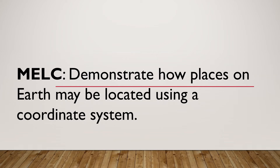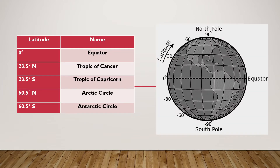Hello Grade 7 students, welcome to our lesson for today for the 4th grading in science, week 1. The MLC is to demonstrate how places on earth may be located using a coordinate system. A globe is just a representation of our planet Earth. In a globe, there are two different lines: we have the horizontal line, we call that the latitude, and we also have the vertical lines, we call the longitude. But first, let's talk about the latitude.